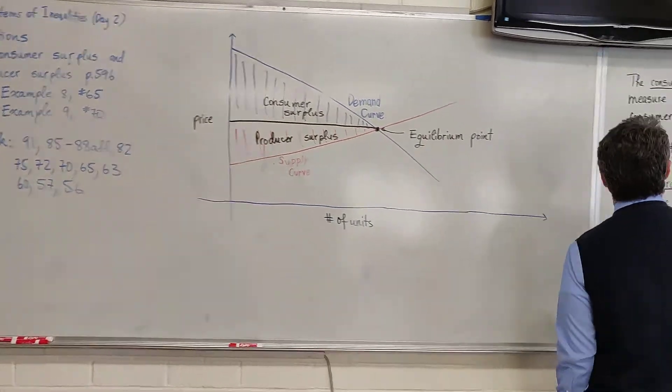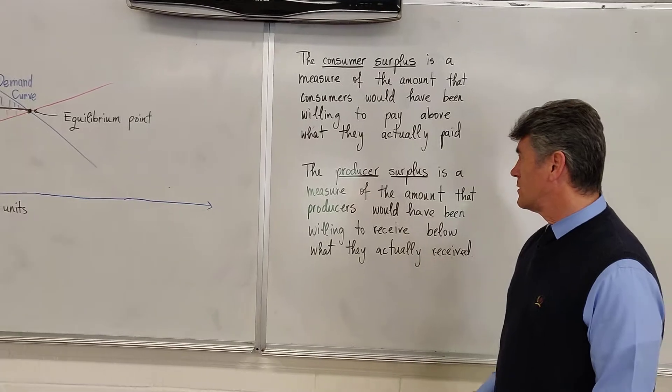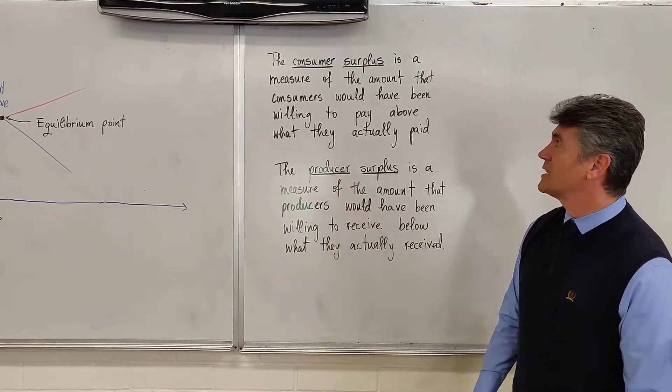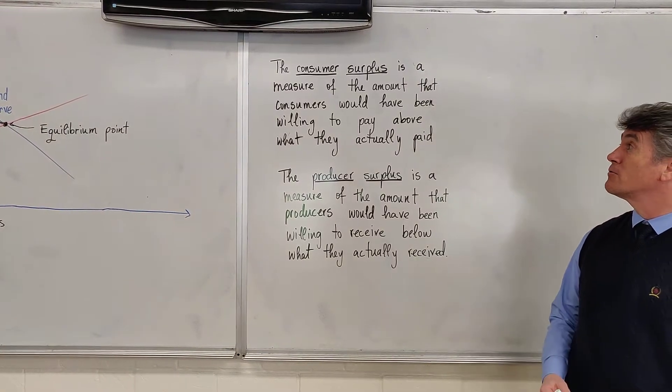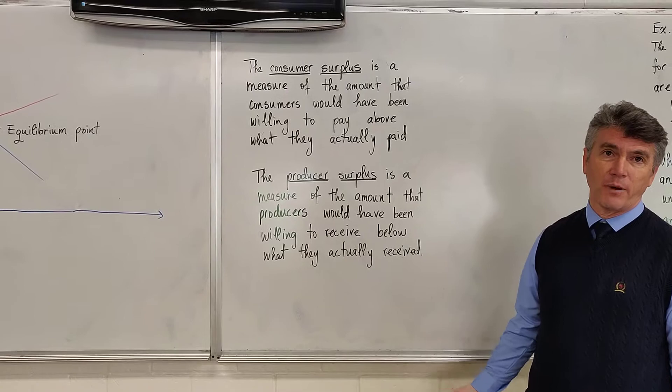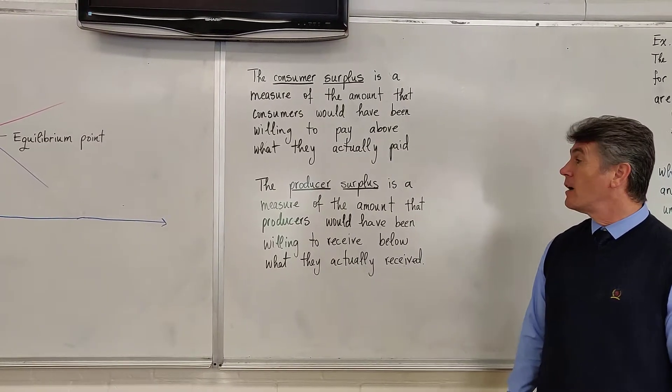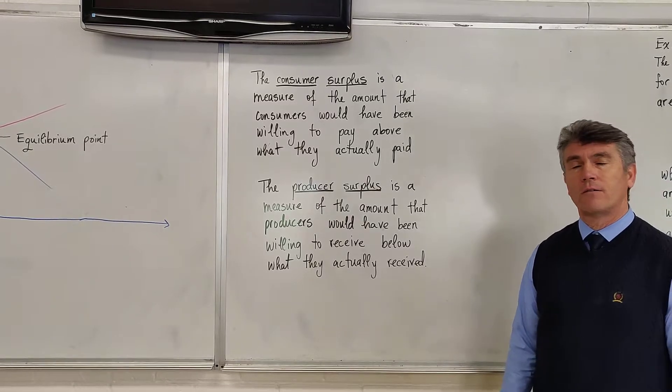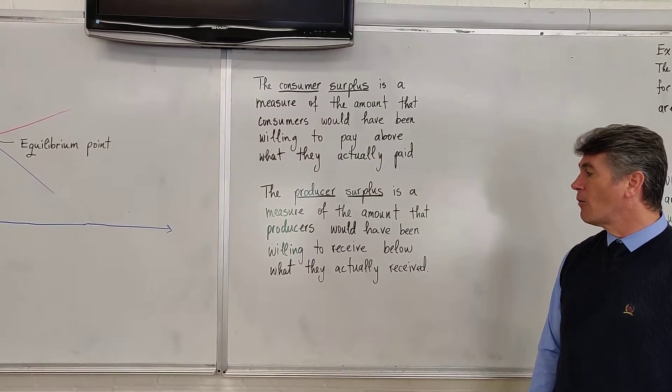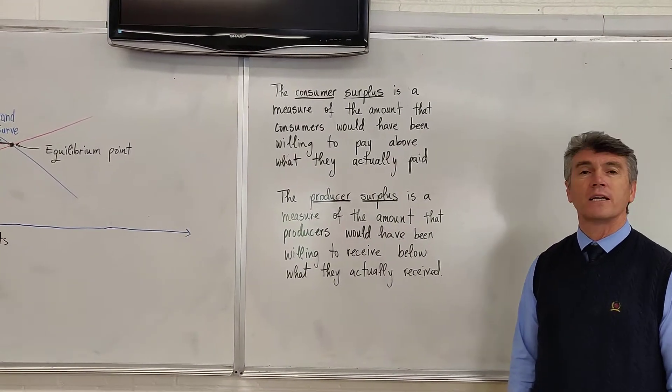It is called Consumer Surplus and Producer Surplus. Consumer Surplus is the measure of the amount that consumers would have been willing to pay above what they actually paid, and Producer Surplus is a measure of the amount that producers would have been willing to accept below what they actually received. Those are concepts from economics.